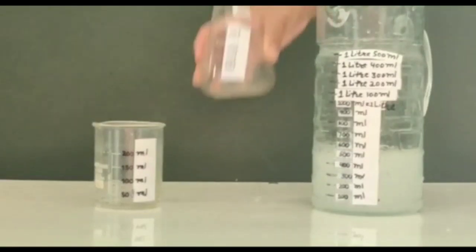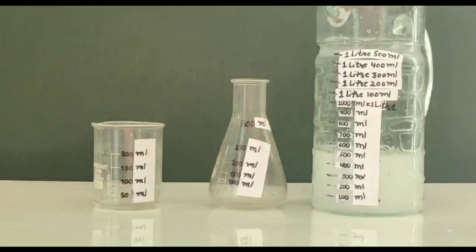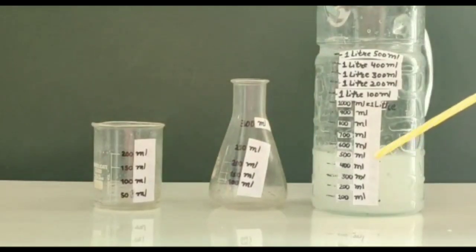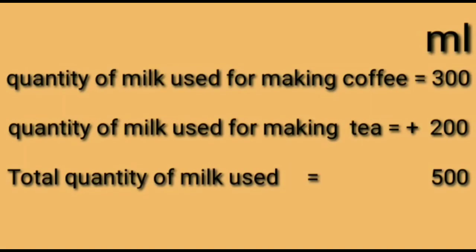Here we can see that the total quantity of milk used by her is 500 milliliter. Now we will see how we can solve this sum in written form. The quantity of milk used for making coffee was 300 milliliter and the quantity of milk used for making tea was 200 milliliter. Like units are always added, and when we add these two quantities, we get the total quantity of milk used as 500 milliliter.